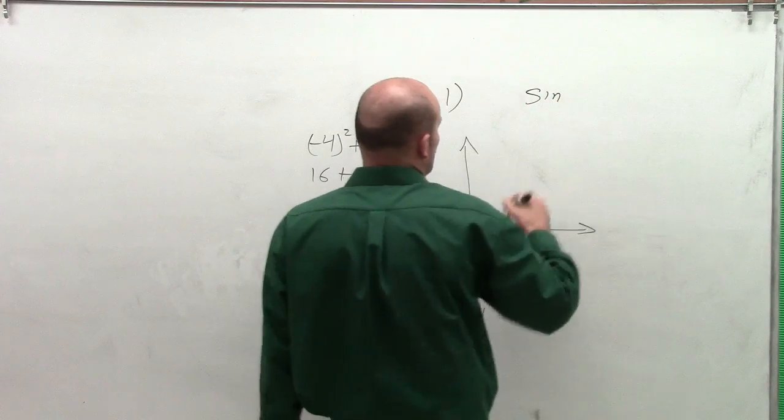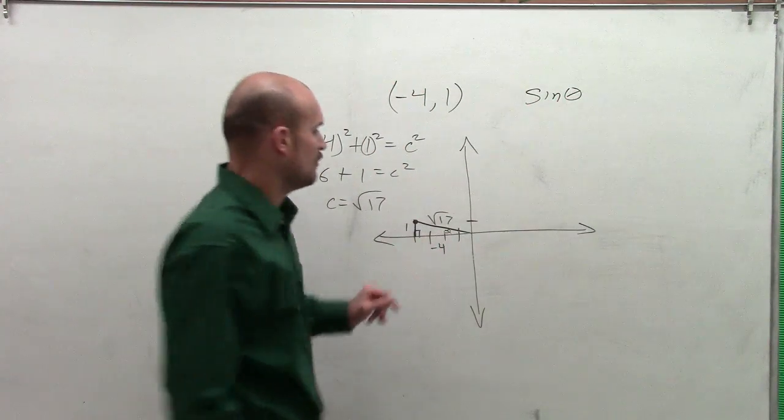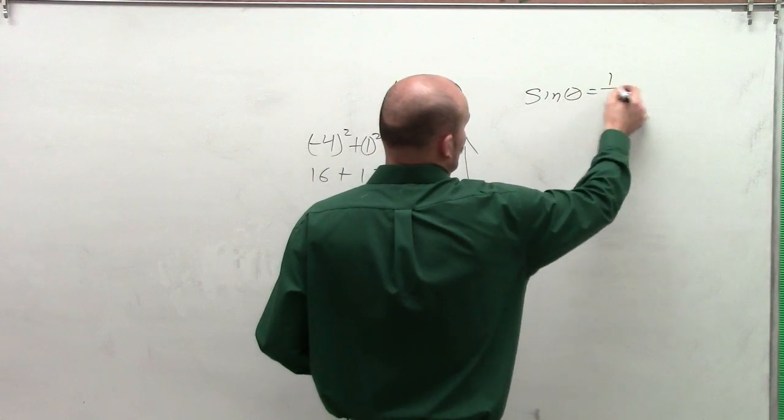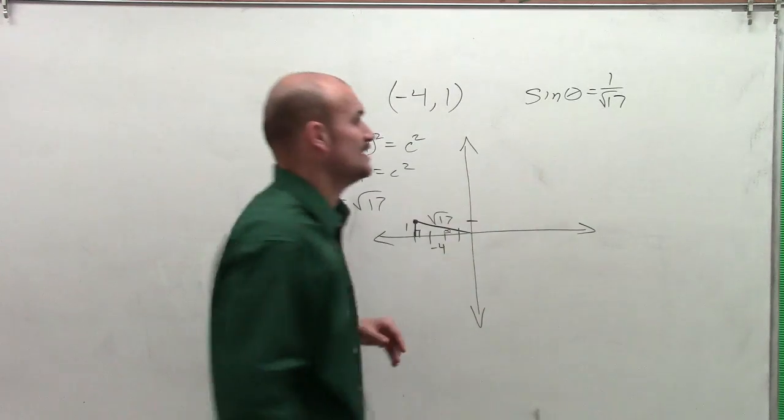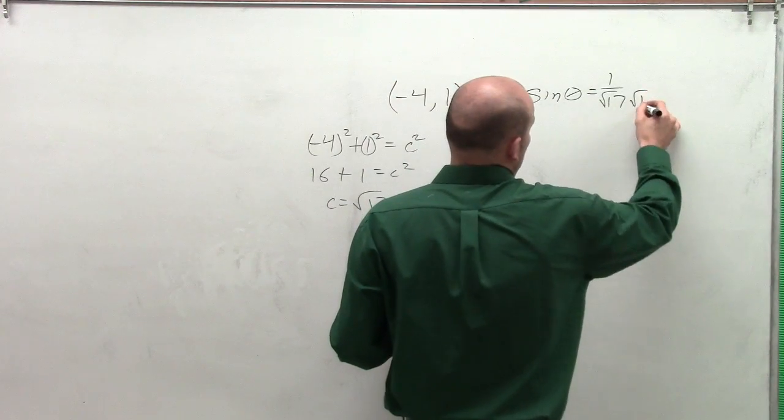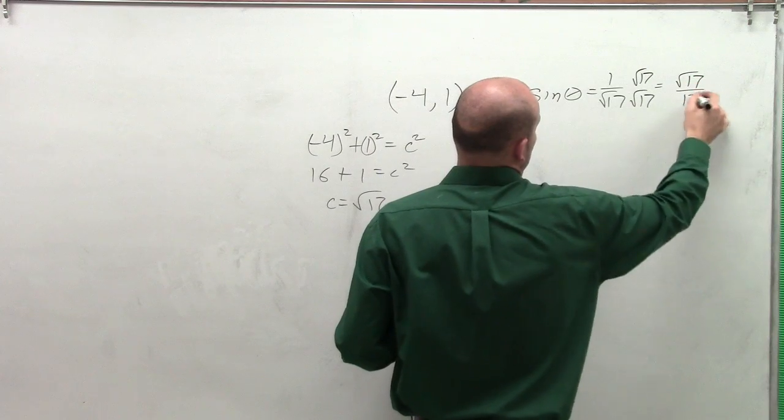Remember, the sine of my angle theta represents the opposite over the hypotenuse. So that's going to be 1 over the square root of 17. Now remember, we do rationalize our denominator. We're going to multiply by √17 over √17, and what I get is √17 over 17.